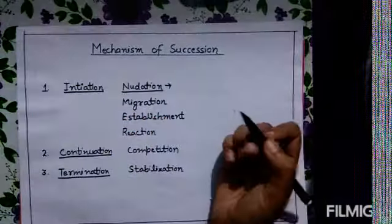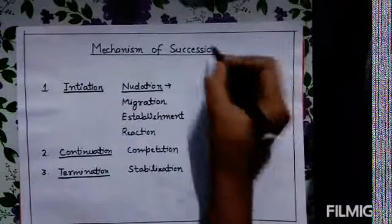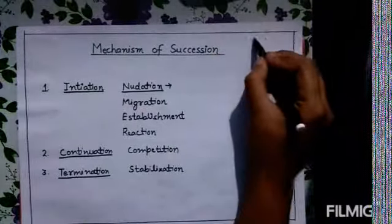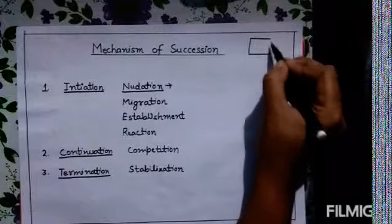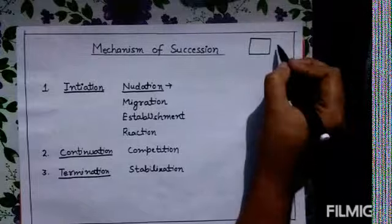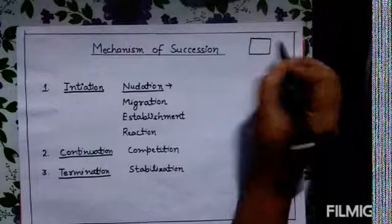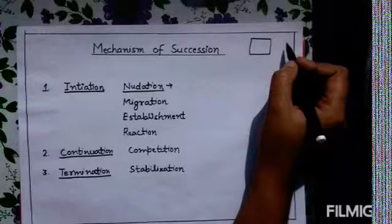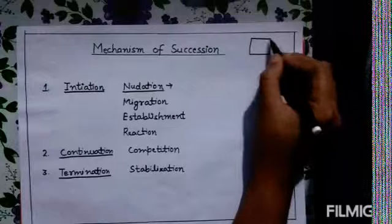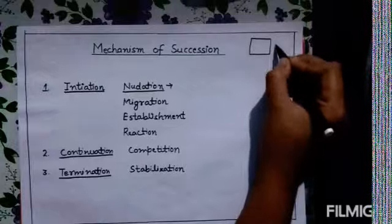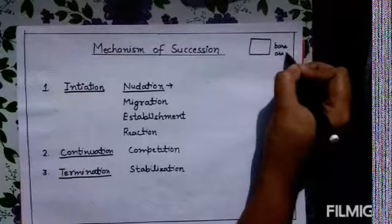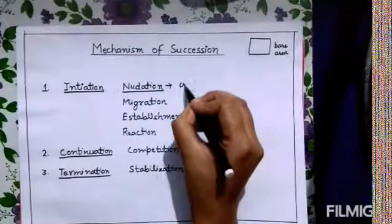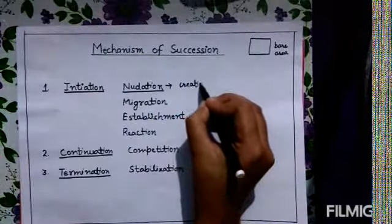First is nudation. If we are referring to a particular succession area, take this as an example — this is a plot and this is a bare area. For starting any succession or for starting any community development, we must have a nude area or bare area. This creation of a bare area is known as nudation, which is the first step.